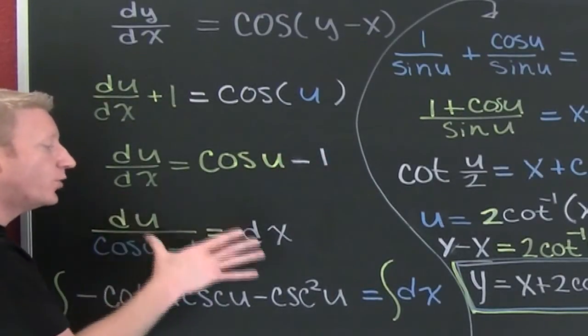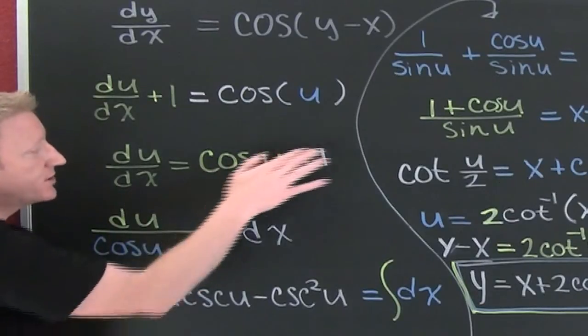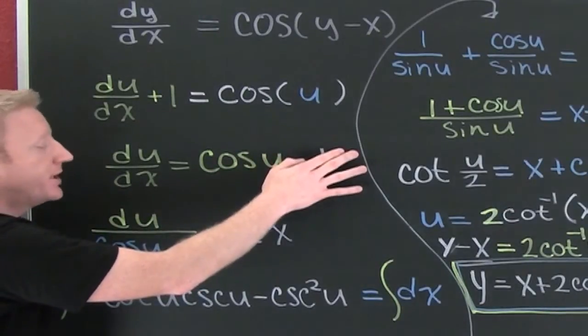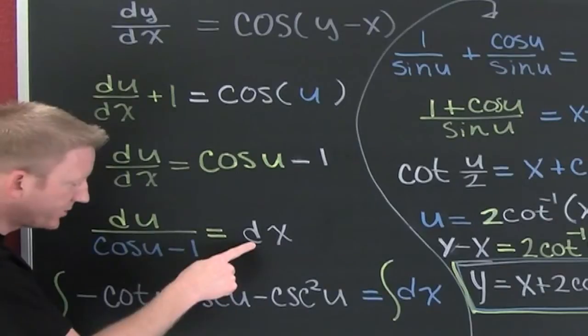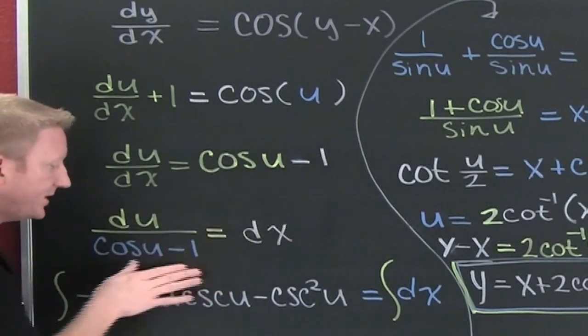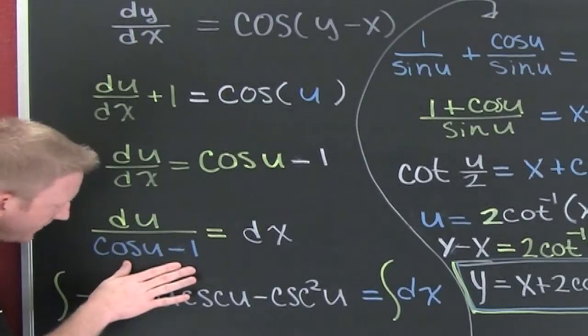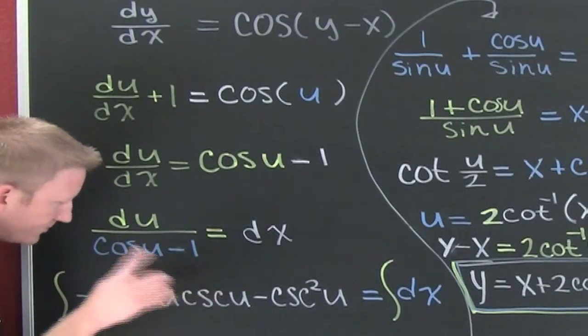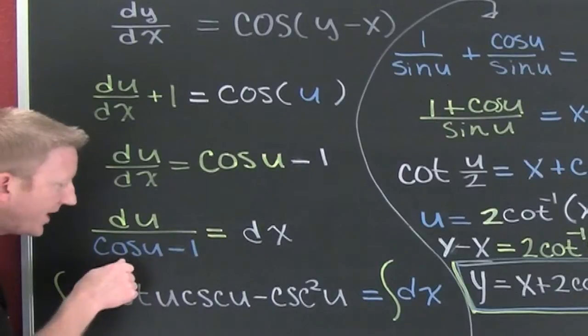I subtract off my one because I'm about to separate my differential. I put dx over there. You're not really multiplying by dx, you're separating your differential. Now that I have that over there I divided by that whole quantity.